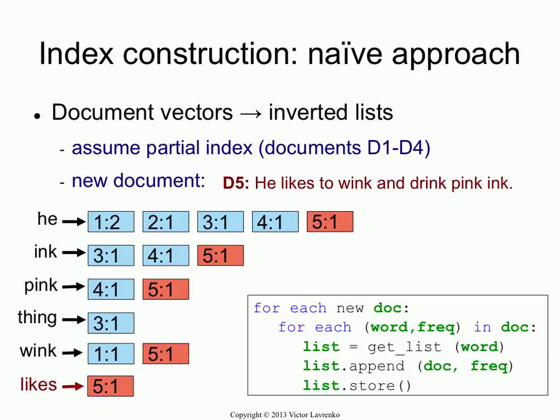In document 5, the word 'he' occurs once, so you write the tuple (5, 1) and append it to the end of the inverted list. Sometimes you have to create a new inverted list — for example, the word 'likes' didn't occur in documents 1 to 4, so you create a new entry and store the tuple there. This is the straightforward approach expected for the second coursework. But what is the problem with it? Why can't Google — or anything at that scale — do something like this?